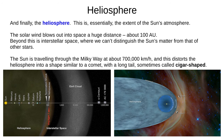We'll finish today with the most distant part of the solar system: the heliosphere. Essentially, this is the Sun's atmosphere — the solar wind blows a huge distance into space, about 100 AU. Beyond this is interstellar space, where we can't distinguish the Sun's matter from that of other stars. The Sun is travelling through the Milky Way at about 700,000 kilometres per hour, distorting the heliosphere into a comet-like shape with a long tail — many astronomers call it cigar-shaped. Note that the Oort cloud is actually in interstellar space. Defining the size of the solar system is tricky: some say it's 30 AU (Neptune's orbit), some say 100 AU (the heliosphere), and some say up to 200,000 AU to the edge of the Oort cloud.